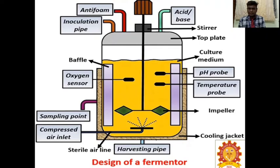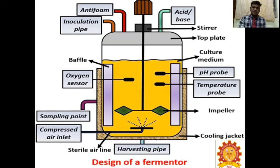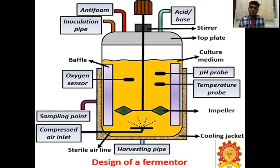Parts of the fermenter include: acid-base port to check pH; stirrer to mix solvents; top plate; culture medium port; pre-heat probe; temperature probe; impeller to mix the broth under culture; cooling jacket to maintain temperature; harvesting pipe to collect culture after fermentation; air inlet; sampling point to collect samples and check bacterial growth; oxygen sensor — if oxygen is present, fermentation collapses because fermentation is an anaerobic process (absence of oxygen); inoculation probe; and anti-foam agent — previously vegetable oil or mineral oil was used.